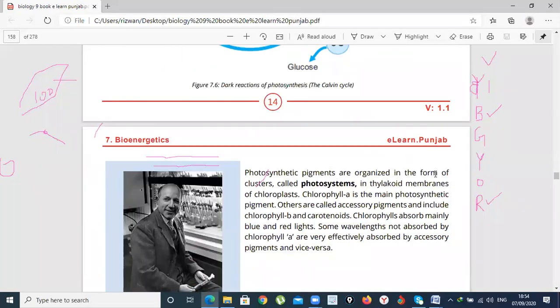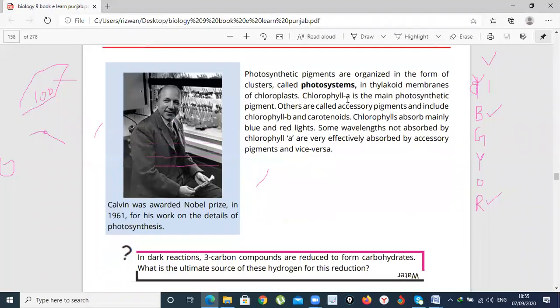Photosynthetic pigments are organized in the form of clusters known as photosystems in thylakoid membranes of chloroplasts. The light reactions occur in thylakoid and the dark reactions in stroma. All of this is in chloroplast. Chlorophyll A is the main photosynthetic pigment. Chlorophyll A and chlorophyll B. Chlorophyll A is main, which is an important pigment.